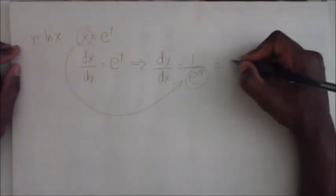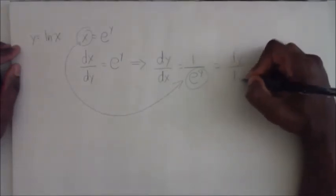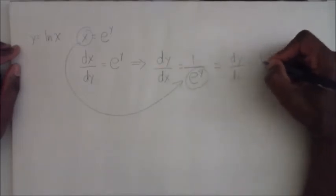And so we now know that the derivative of y with respect to x is equal to one over x.